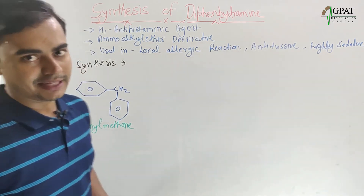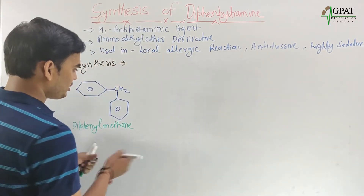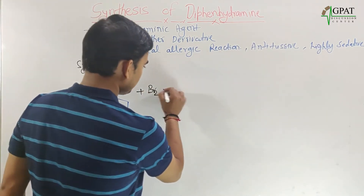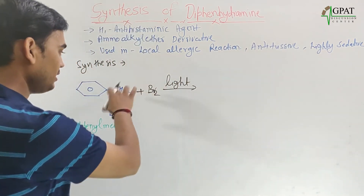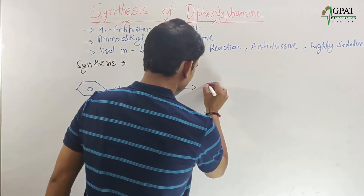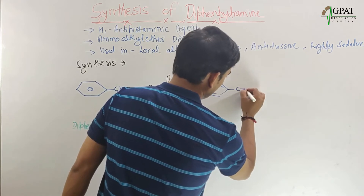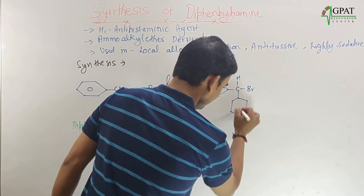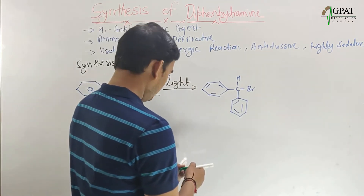This diphenylmethane undergoes bromination in the presence of light. The bromine reacts in the presence of light, and the methylene group undergoes bromination to form diphenyl bromomethane. Here we have the bromine — this is diphenyl bromomethane.